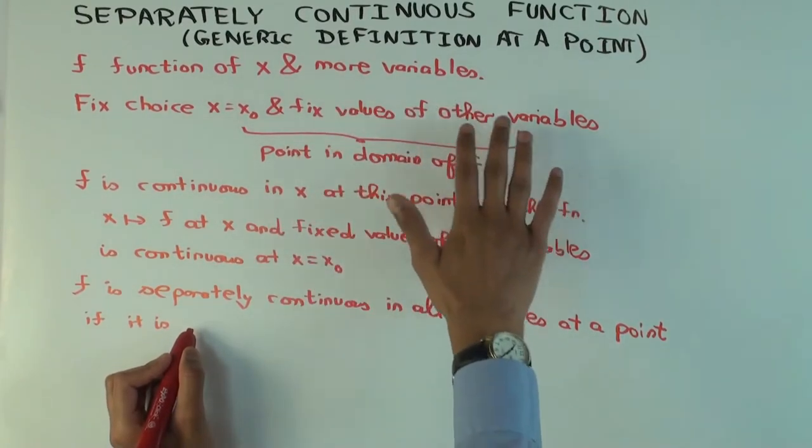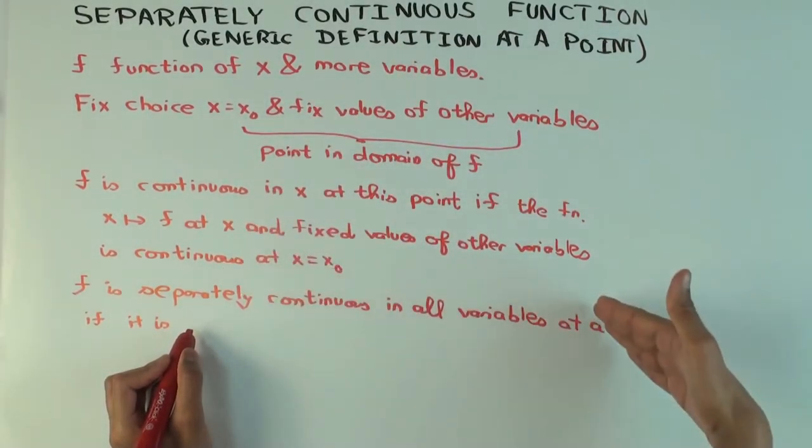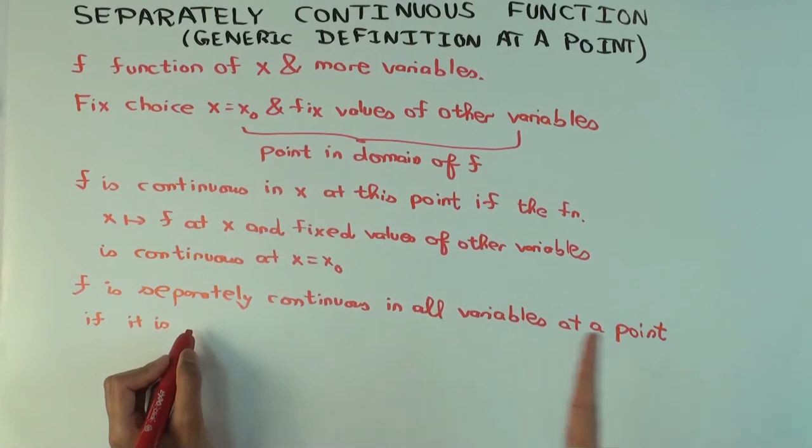So if it's a function of five variables, you're saying it's separately continuous in all variables means that for each one of the five variables, it satisfies this definition above.